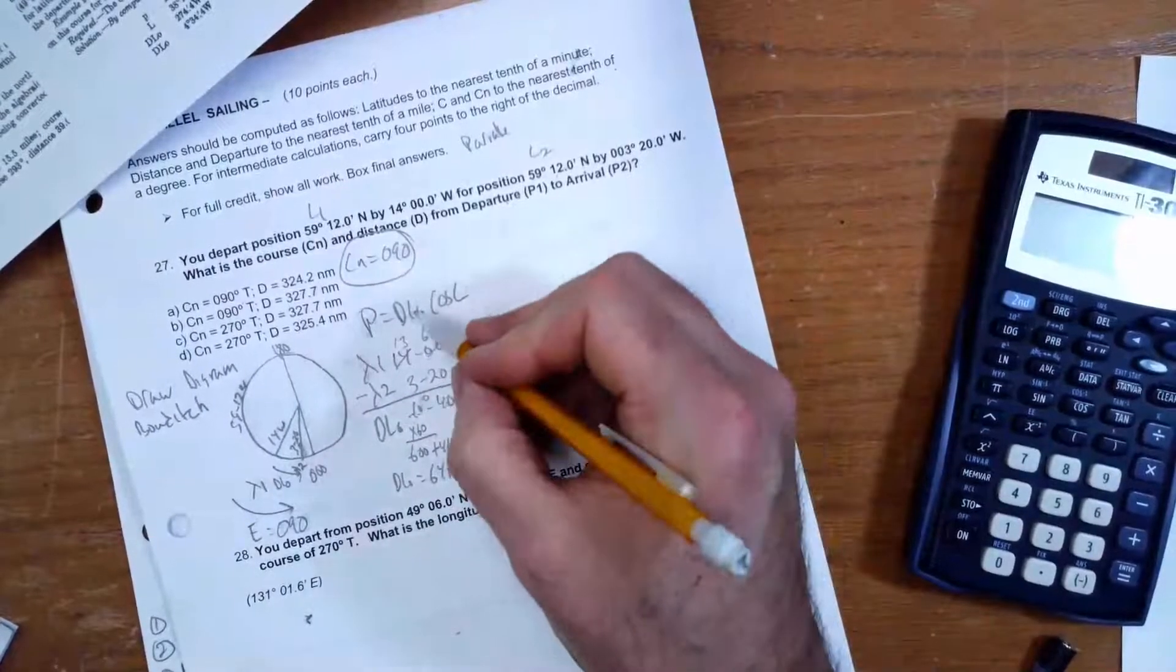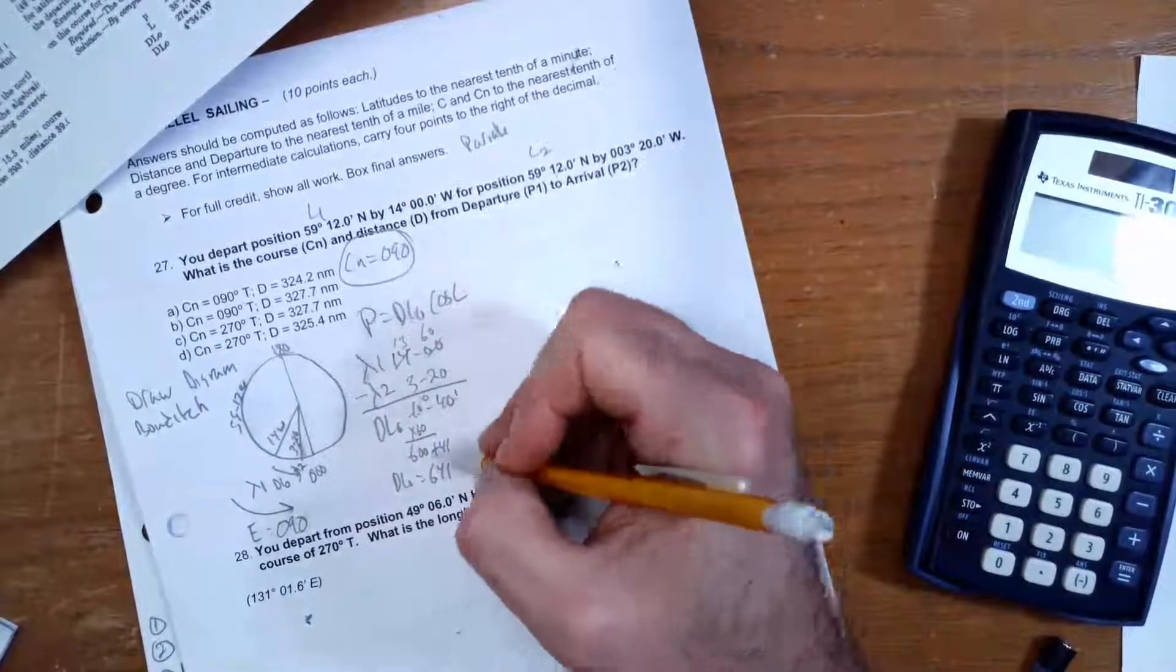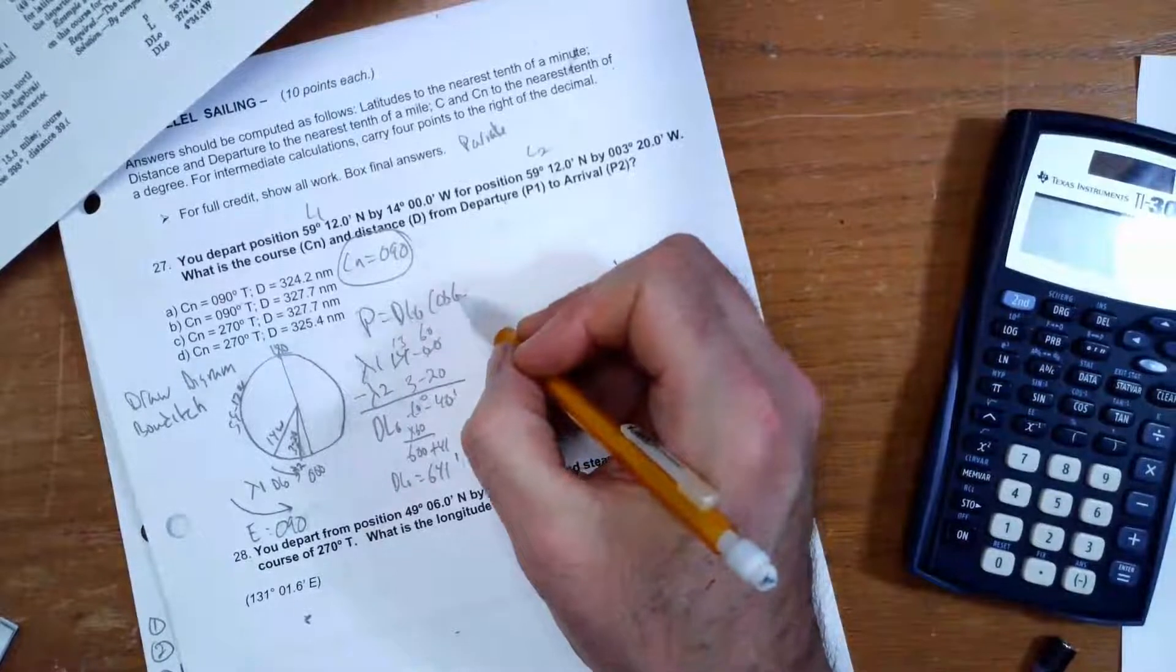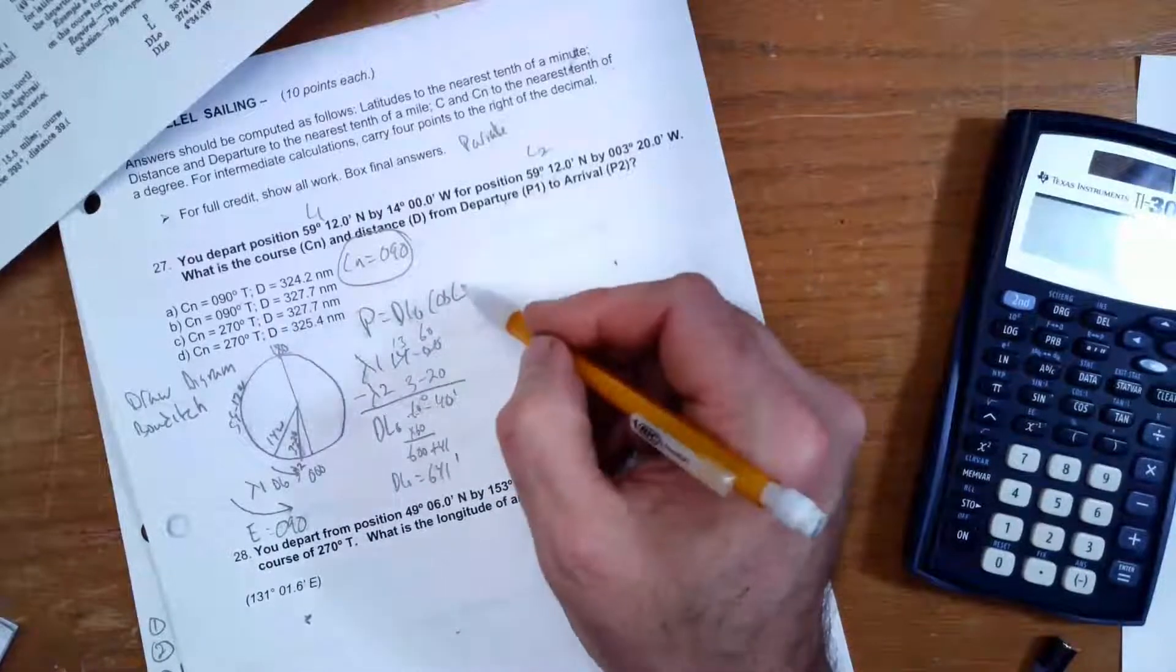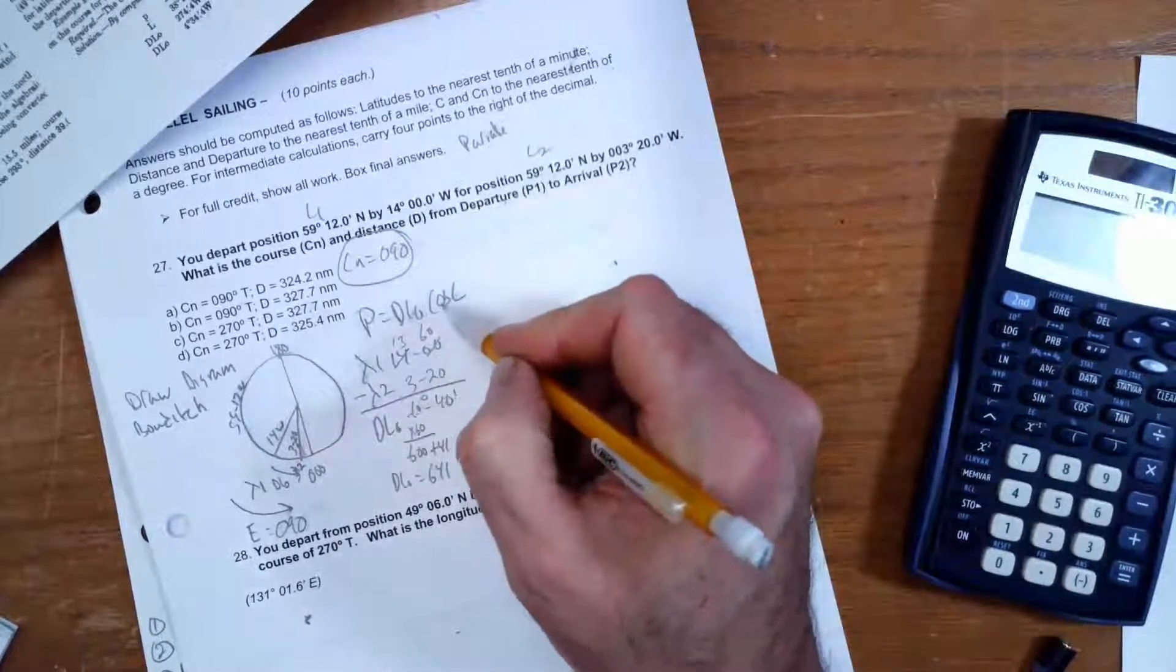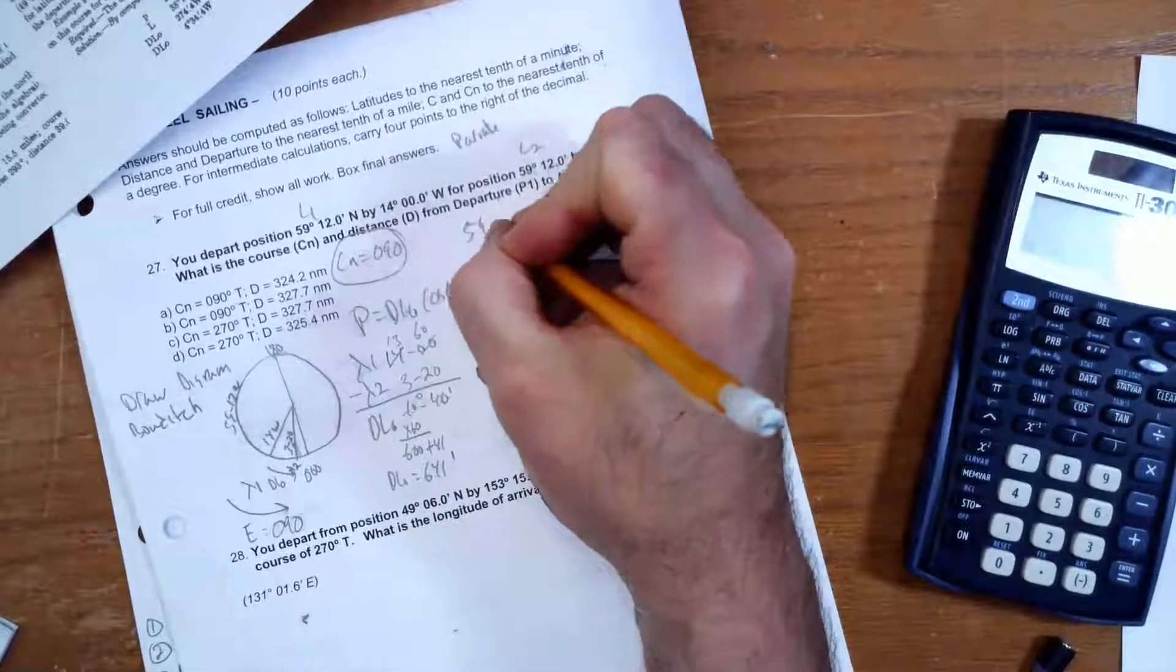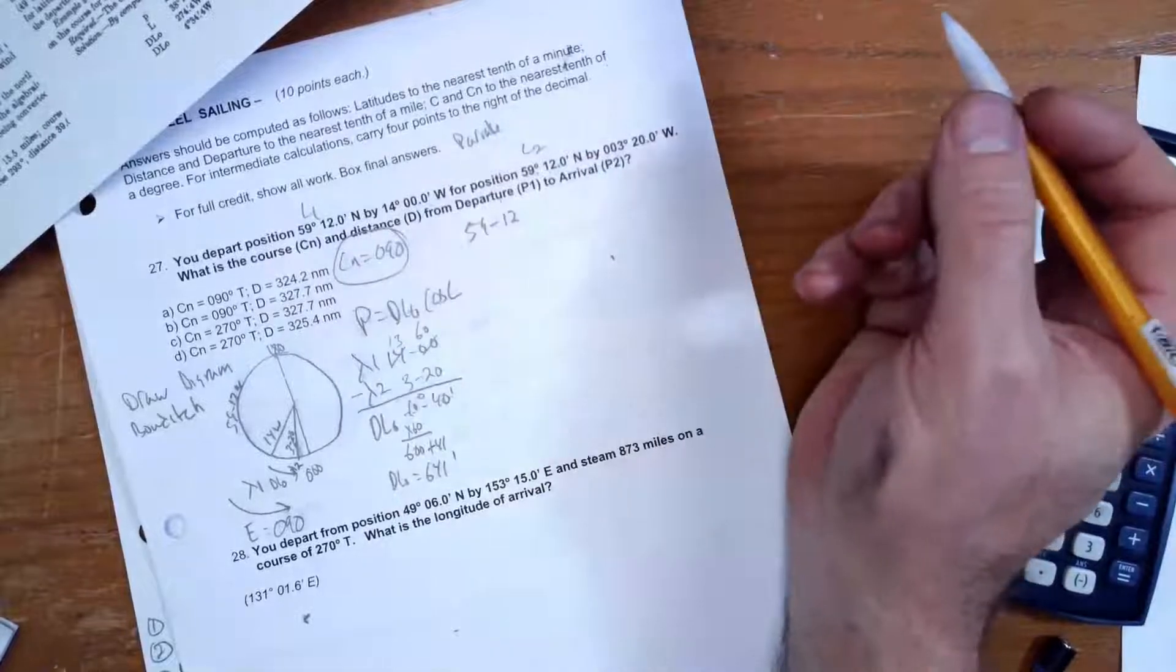So that DLo is going to go there. I'm going to substitute that in there. Now, L is latitude. Well, they gave me my latitude 59°12', but I'm going to do a trig function, and that must be in degrees, so I got to convert 59°12' to decimal degrees.